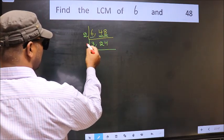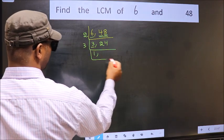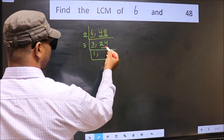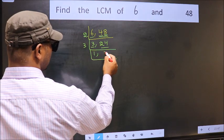Now here we have 3. 3 is a prime number so 3 times 1 is 3. The other number 24, when do we get 24 in the 3 table? 3 times 8 is 24.